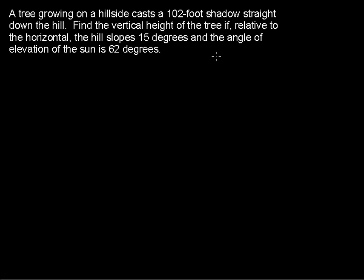A tree growing on a hillside casts a 102-foot shadow straight down the hill. Find the vertical height of the tree if, relative to the horizontal, the hill slopes 15 degrees and the angle of elevation of the sun is 62 degrees.